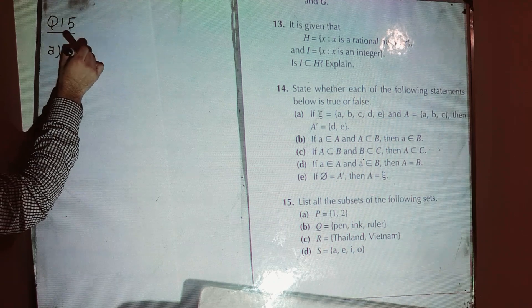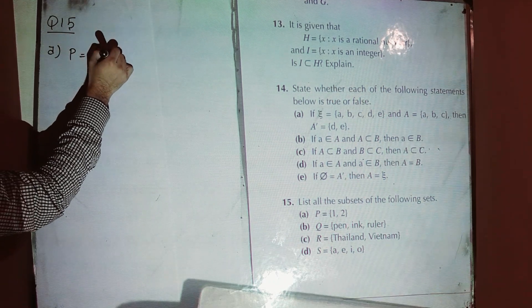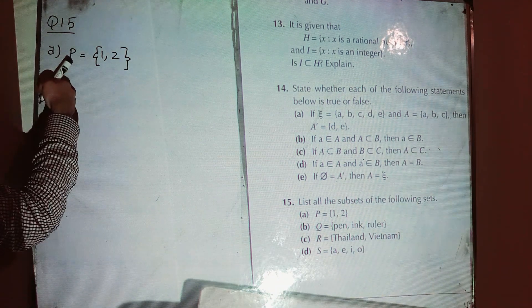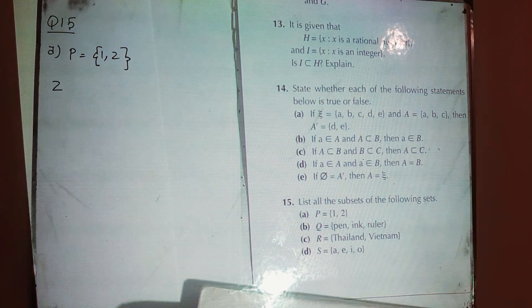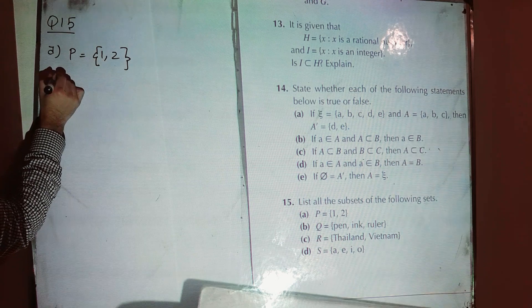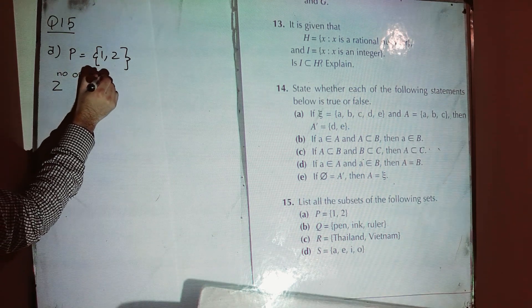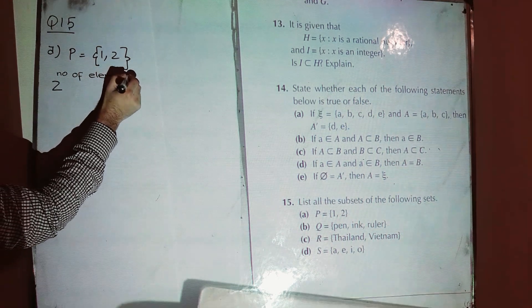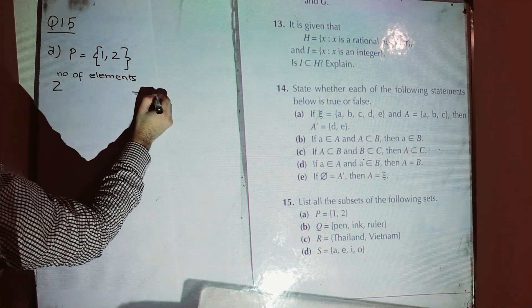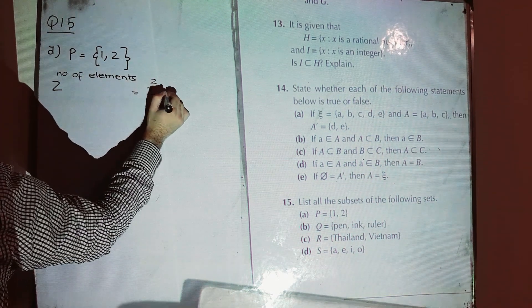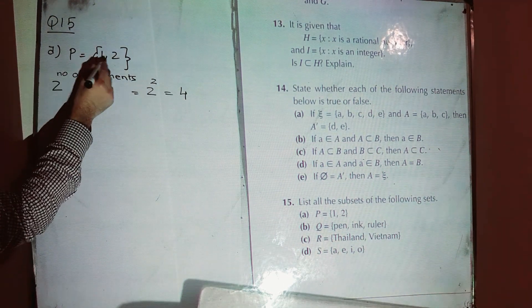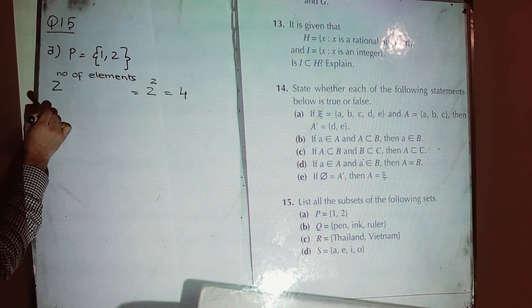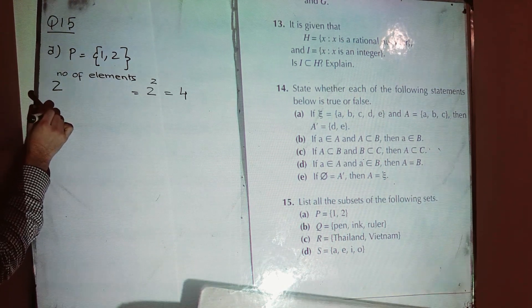We have part A with set P containing elements {1, 2}. To find how many subsets can be made, simply take two raised to the power of the number of elements. We have two elements, so two raised to the power two gives four. So we have four subsets of P.